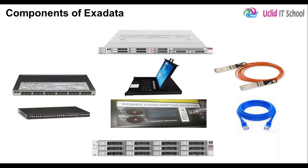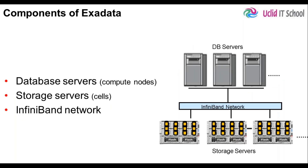There are many components in an Exadata rack — database servers, storage servers, InfiniBand switches, InfiniBand cables, ethernet switches, ethernet cables, KVM switch, and power distribution units. But the primary components of Exadata are the database servers, also called compute nodes; storage servers, also called Exadata cells; and an InfiniBand network which interconnects all the servers within.